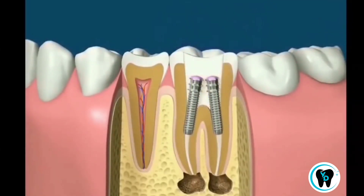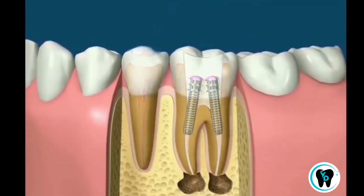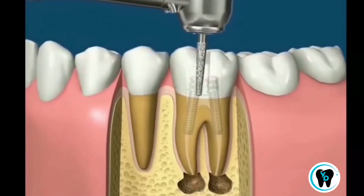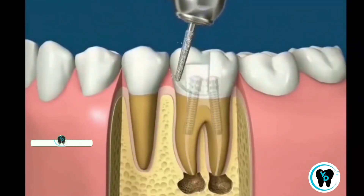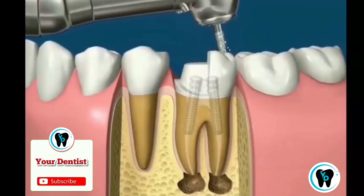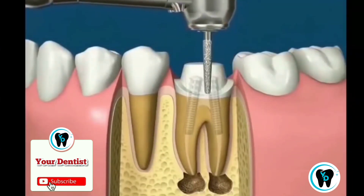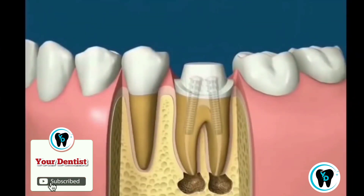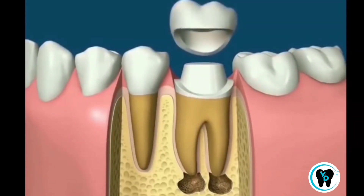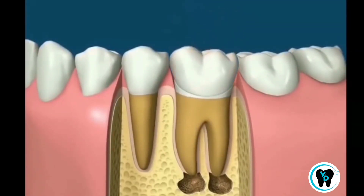The best treatment usually involves preparing the tooth and covering it with a full crown, sometimes called a cap. Any pathology at the tip of the root should disappear with time, and the tooth will be saved.